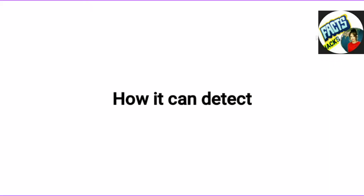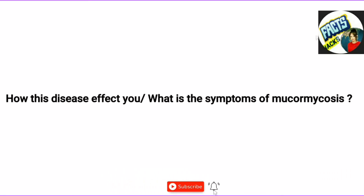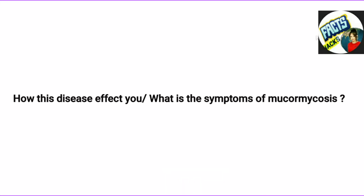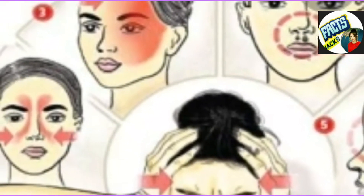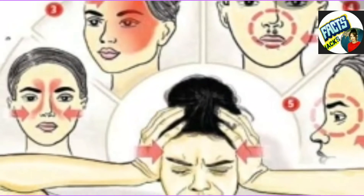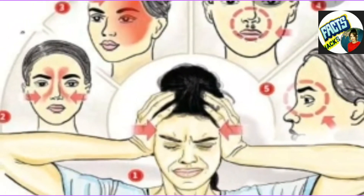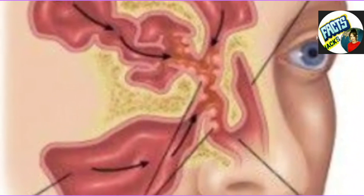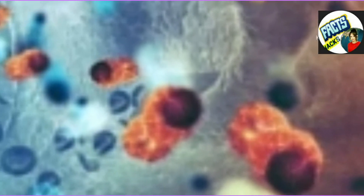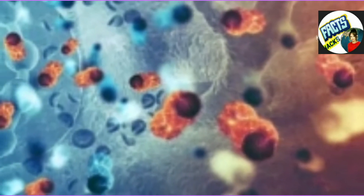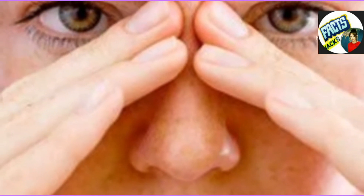A CT scan of the face would detect this infection. Mucormycosis can affect the face, affecting the nose, orbit of the eye, or brain, which can cause even vision loss. It can also spread to the lungs. Some early signs of the condition include sinus pain or nasal blockage on one side of the face.